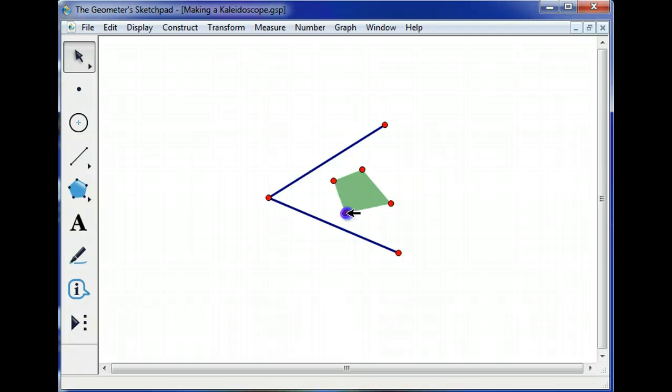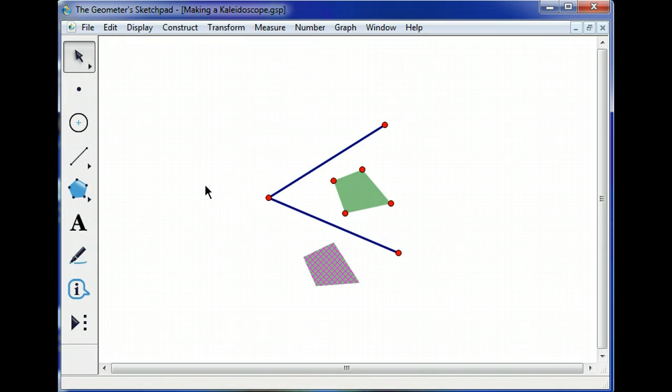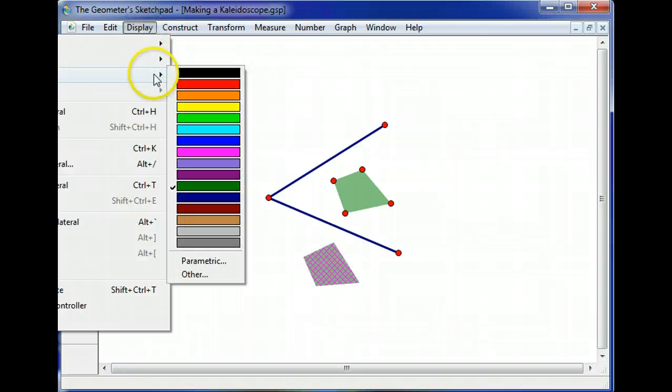And now I'm going to reflect this polygon over this segment. So I double-click that segment, now it's a mirror, select the polygon, not the points, just the interior, go to Transform, Reflect. Okay, so here's my reflection. Notice it's the same color, so to distinguish it I'm going to go to Display, Color, and I'll change that to Yellow.